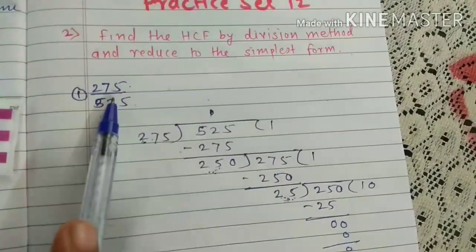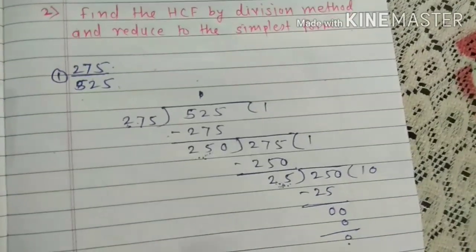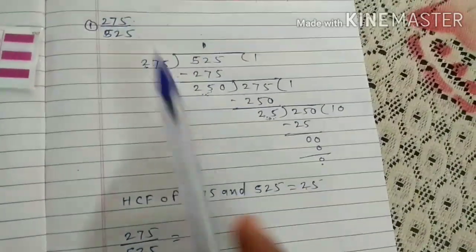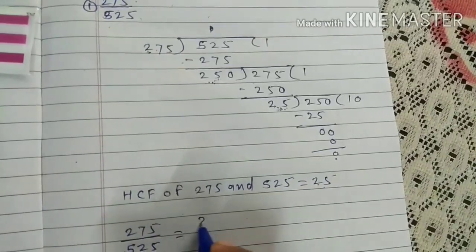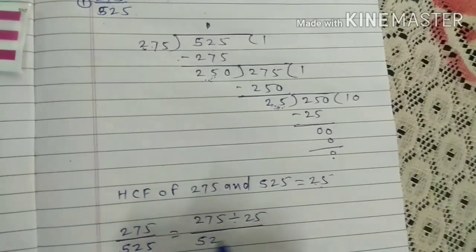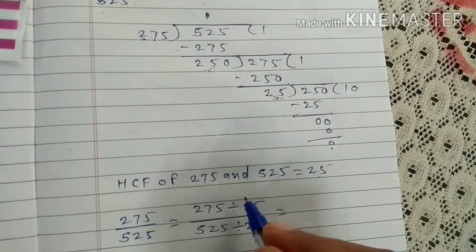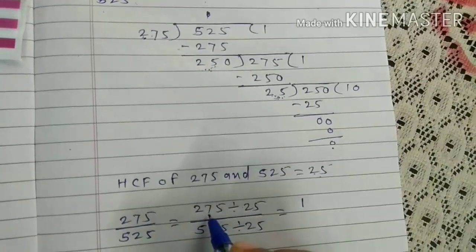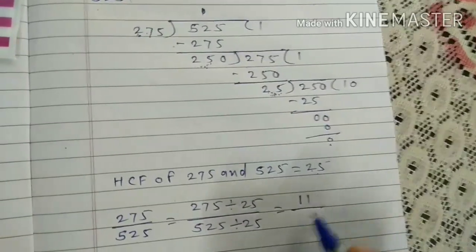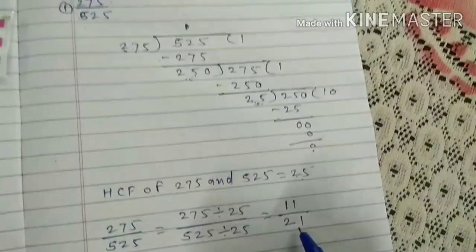275 upon 525 is equal to 275 divided by 25, upon 525 divided by 25. 275 divided by 25 is 11, and 525 divided by 25 is 21. So the simplest form is 11 upon 21.